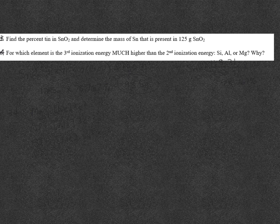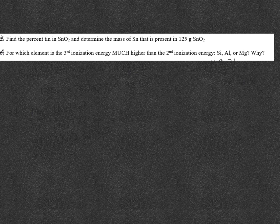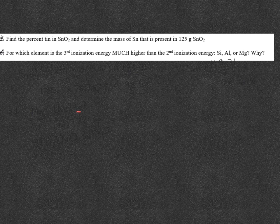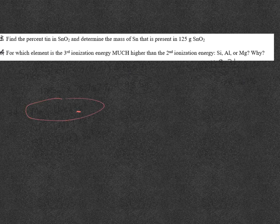So if magnesium loses two electrons, so if it loses these two electrons right here, it becomes just like a noble gas. It becomes just like neon, which means the third ionization energy is going to be ridiculously high. So for magnesium, the third ionization energy is much larger than the second because once it loses two, it becomes just like neon.